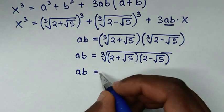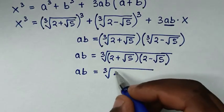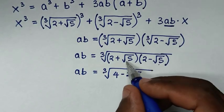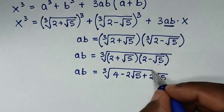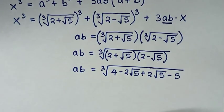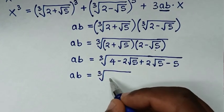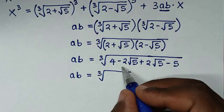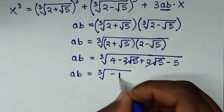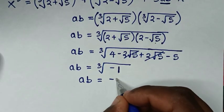It will be ab equals cube root of: 2 times 2 is 4, then 2 times negative square root of 5 is negative 2 square root of 5, plus 2 square root of 5, then square root of 5 times negative square root of 5 is negative 5. The 2 square root of 5 terms cancel, leaving 4 minus 5, which is negative 1. Therefore ab equals cube root of negative 1, which is negative 1.